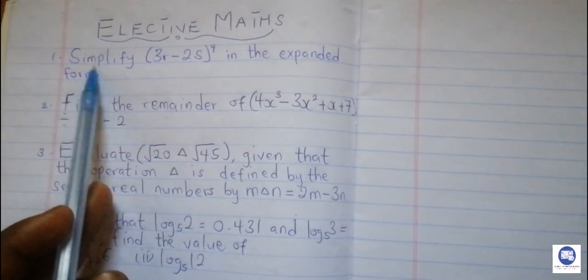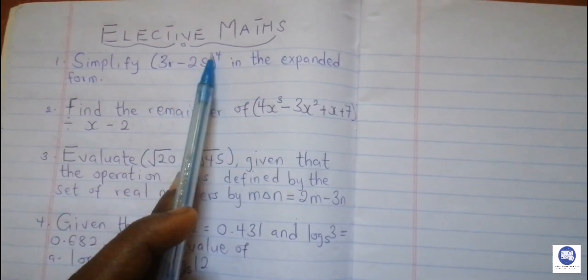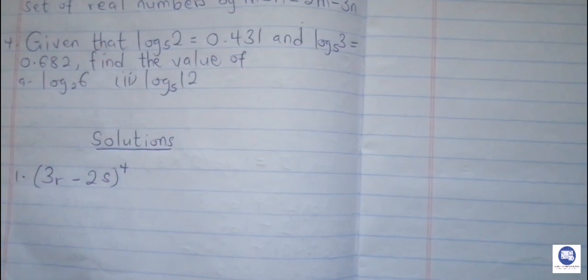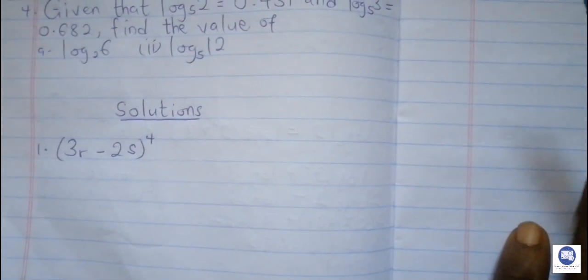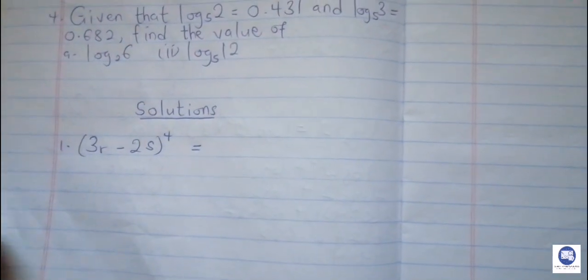Number one says that we should simplify (3r minus 2s) raised to the power 4 in the expanded form. So this is a question from polynomials. We have to expand this in the binomial expression form. The first thing to do is we are going to find the coefficients.